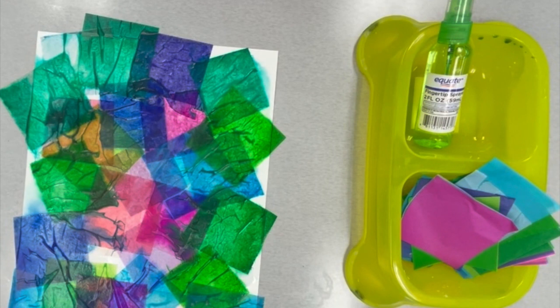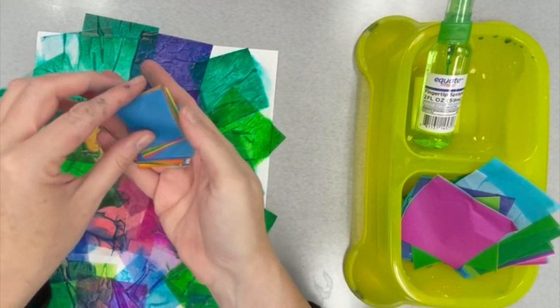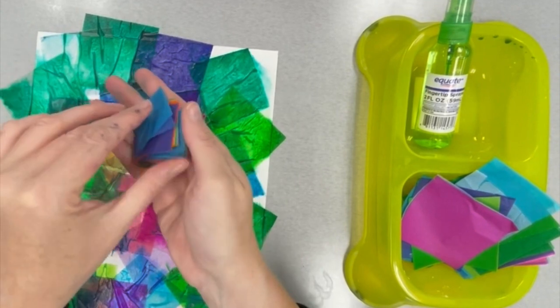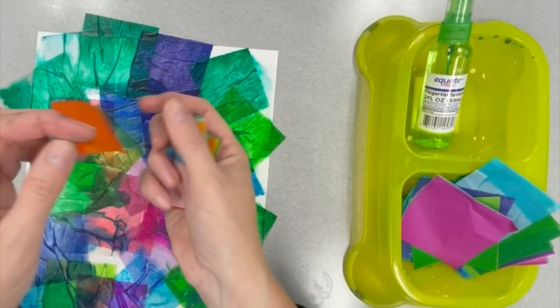I still have some white space on my paper. So I'm going to come in with a smaller square. These squares have different colors than the larger squares. I'm going to add yellows and oranges and different blues in some of those white spots that are still on the paper.